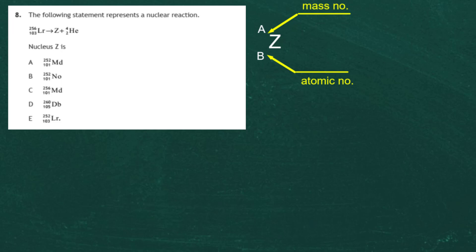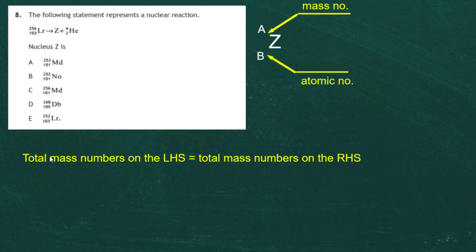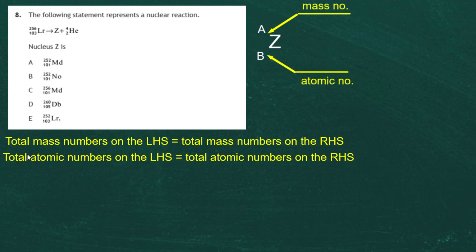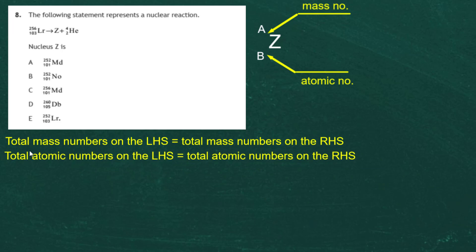In any nuclear reaction, the total mass numbers on the left-hand side of the arrow must equal the total mass numbers on the right-hand side. Likewise, the total atomic numbers on the left must equal the total atomic numbers on the right. We'll rewrite the equation to make this easy.